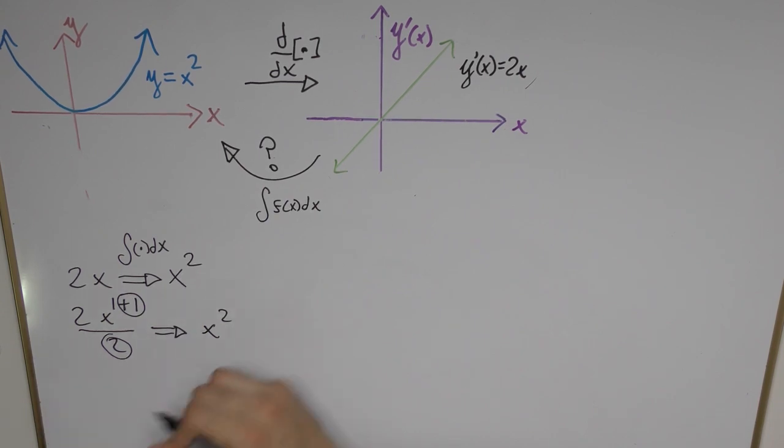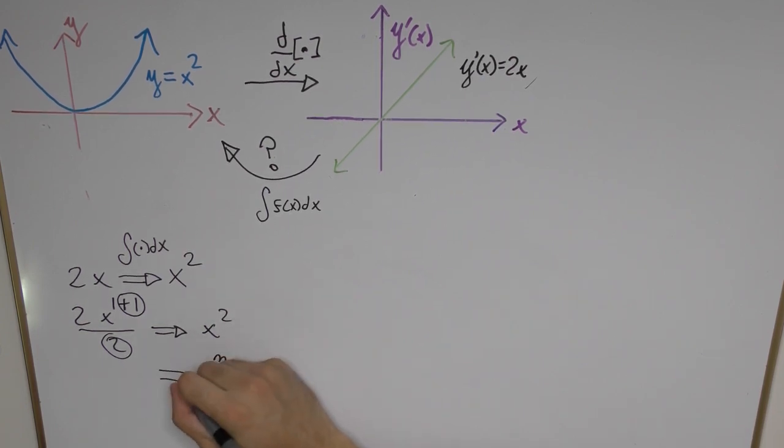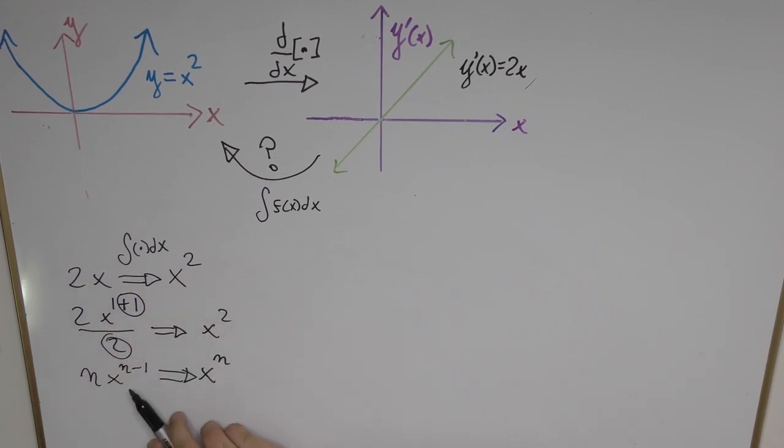Now suppose we started off with a more general example such as x to the power of n. Now we would like to know if we started off with the derivative which is going to be n times x to the power of n minus 1, how can we get from this function all the way to the original function via this integration?